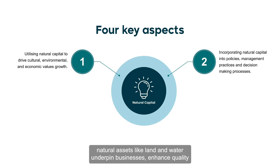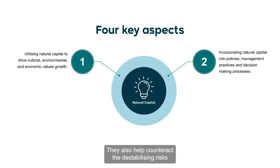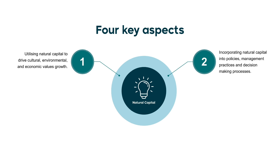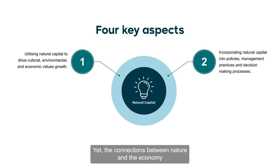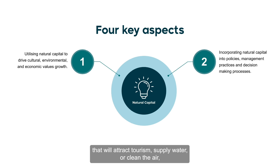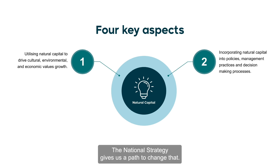And I quote from this document: natural assets like land and water underpin businesses, enhance quality of life and act as a stabilising force for economic prosperity and opportunity. They also help counteract the destabilising risks to our environment and markets caused by climate change and nature loss. Yet the connections between nature and the economy are not currently reflected in our national economic statistics. When the government spends $1 to restore a coral reef or a forest that will attract tourism, supply water or clean the air, our current system does not capture the economic value of this investment. The national strategy gives us a path to change that.